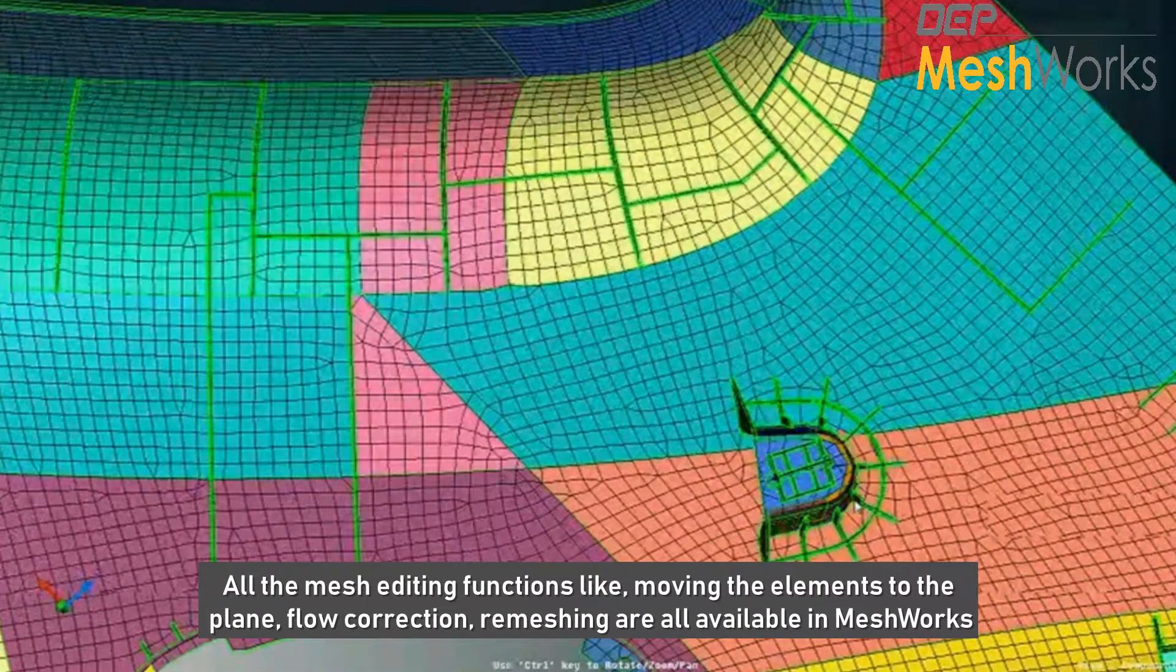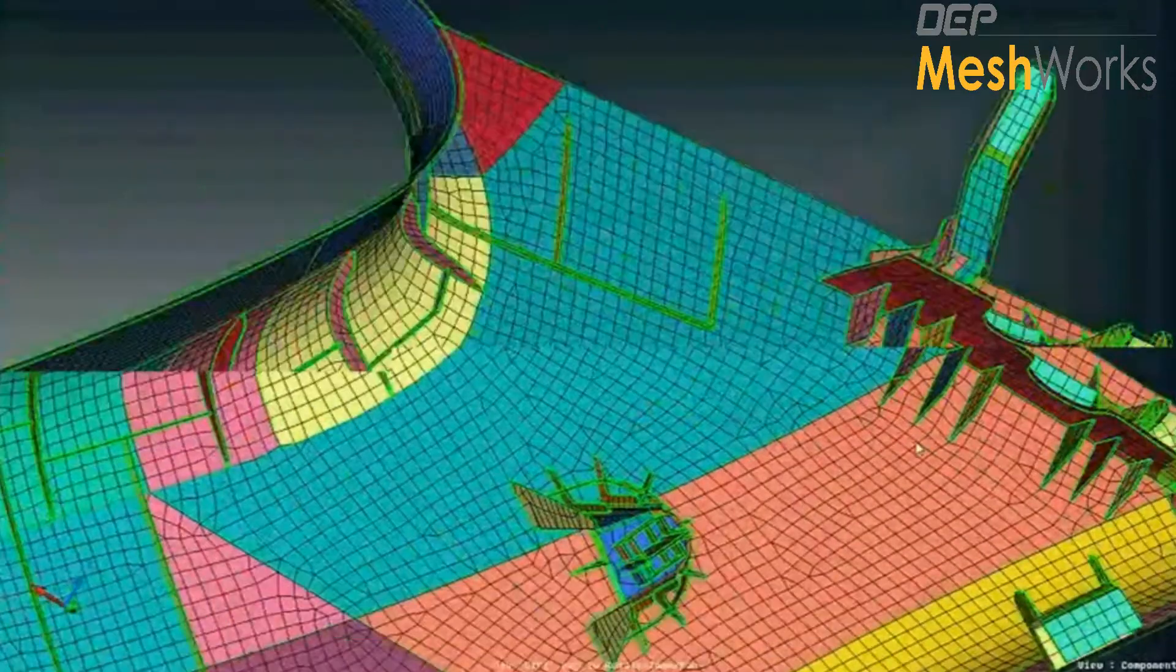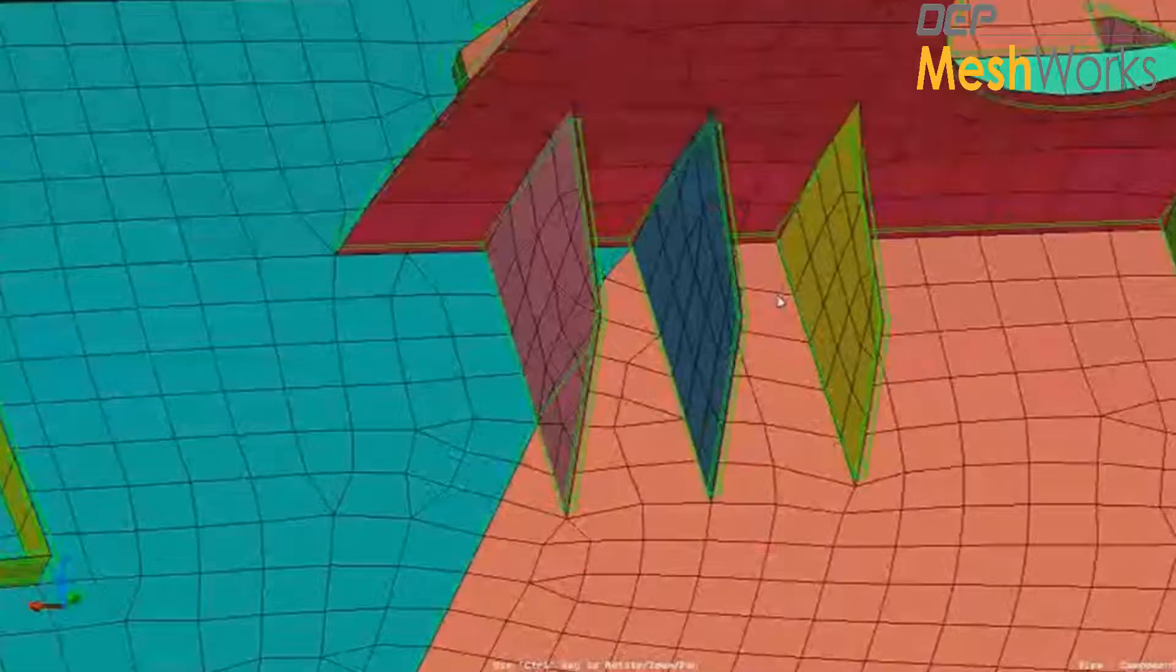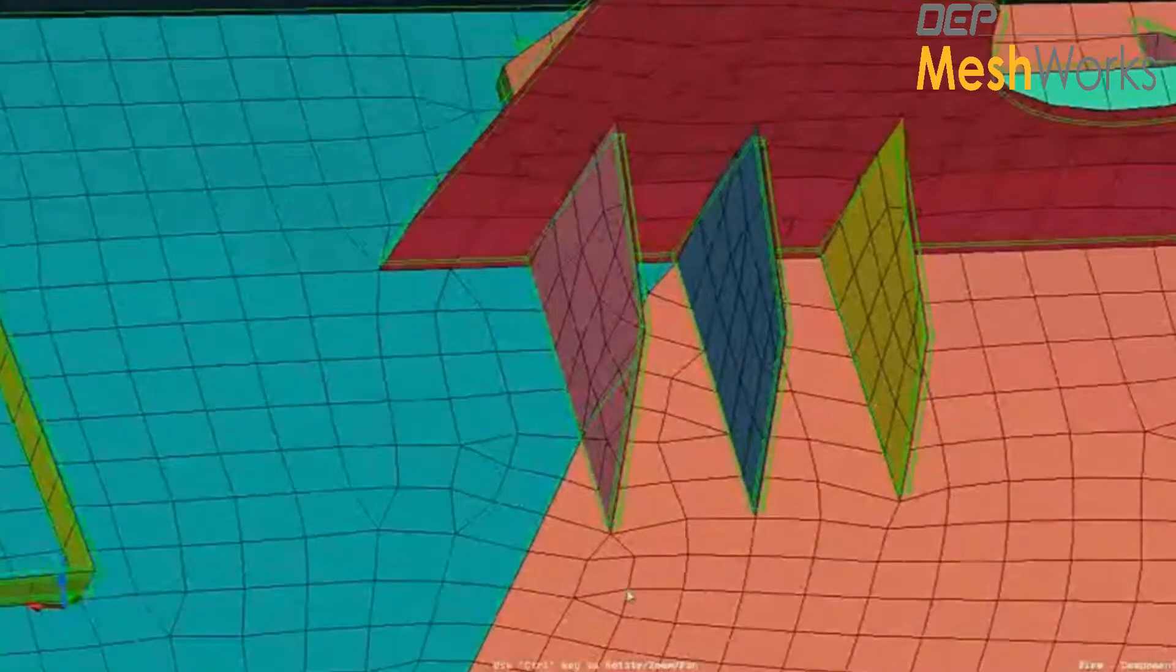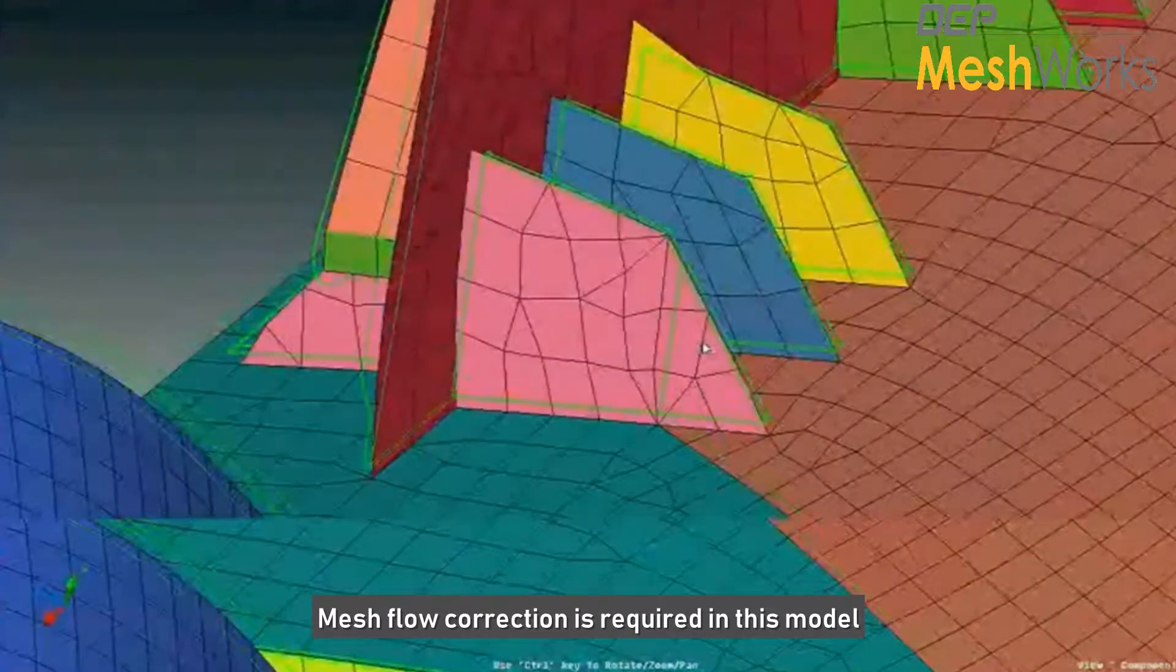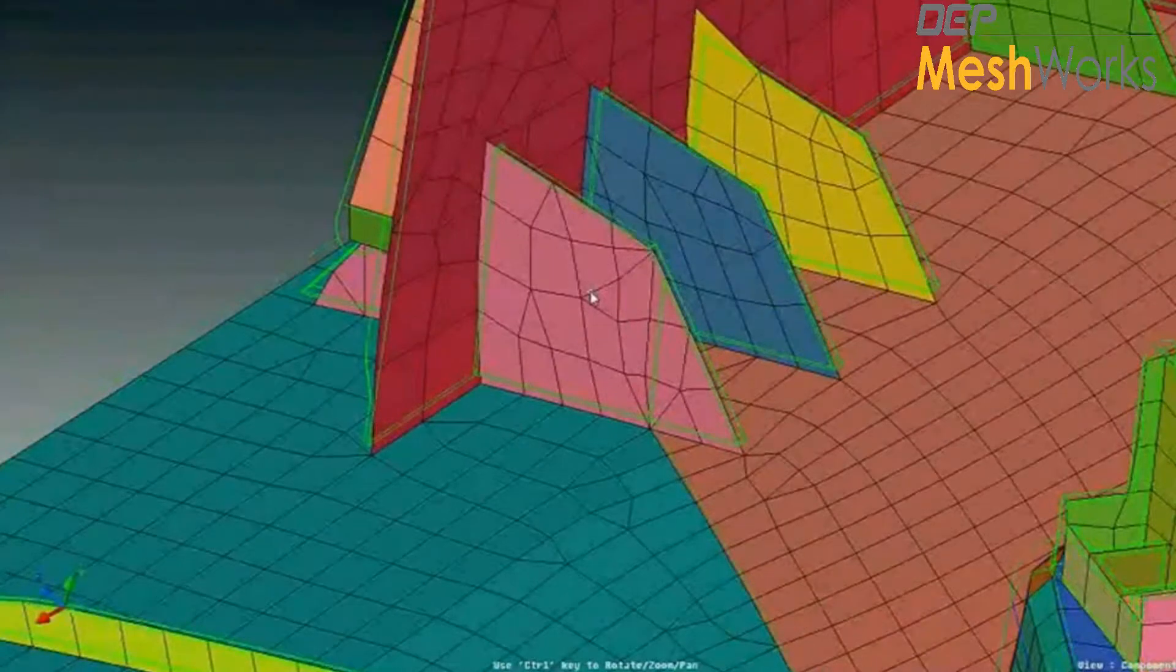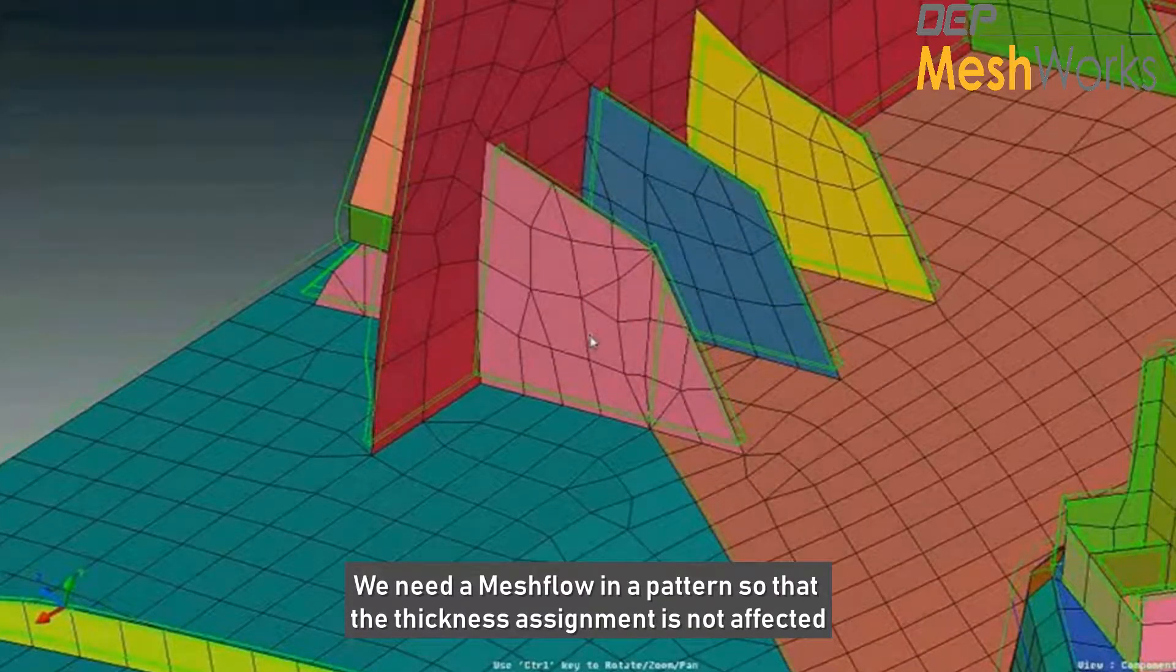remeshing options are already there in Meshworks. Let me take you to this particular example where the mesh flow is not that good. I want to have a kind of mesh flow like a pattern so that during my thickness assignment, I would get a layered thickness assignment.